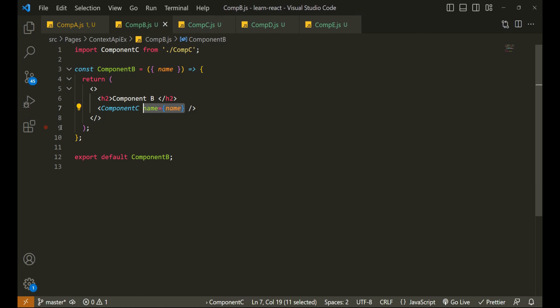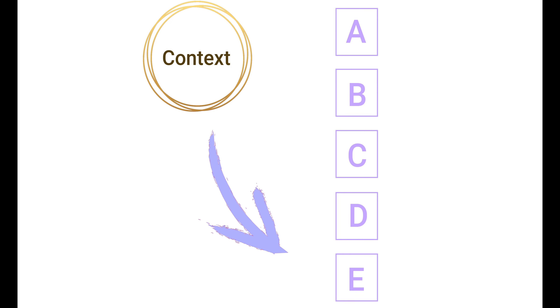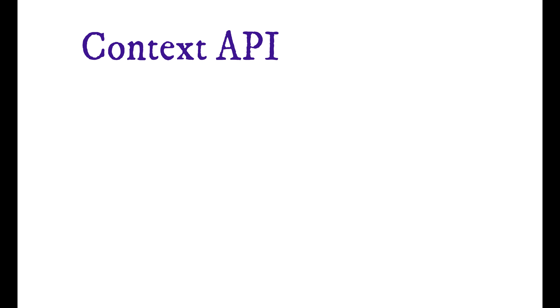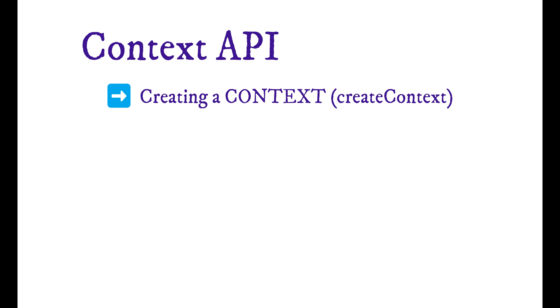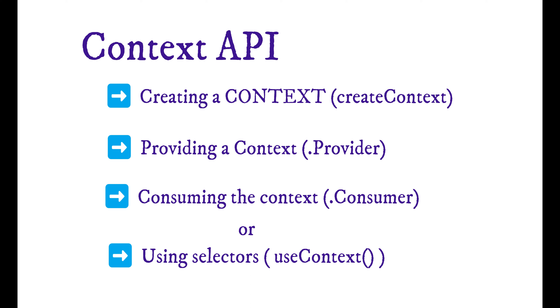To overcome this difficulty we have Context API, where it will just pass to all the innermost components. The only component that wants this data can pick it from that store or from that context. Context API has the following four things — four principles you can say: creating a context, providing the context, and consuming the context. We can consume the context in two ways: by consumers and by selectors. We'll see all of them right now.